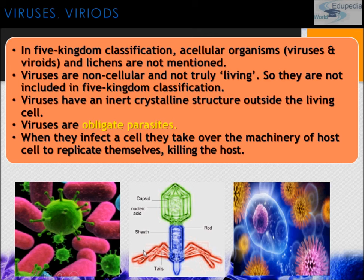This is the illustration of a bacteriophage. It has a hexagonal-shaped head containing nucleic acid covered by a capsid, a main body covered by a sheath, and tail fibers at the bottom that attach to the host cell. The virus then takes over the machinery of the host cell to replicate itself and kills the host.